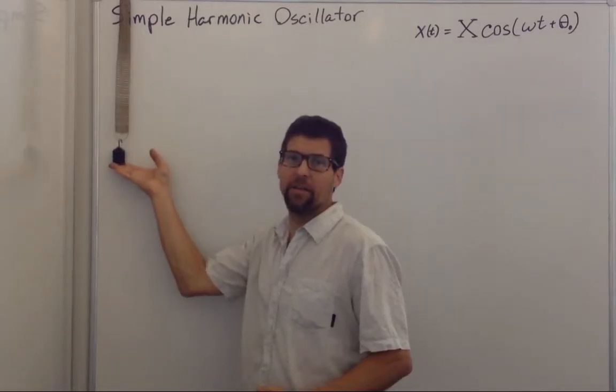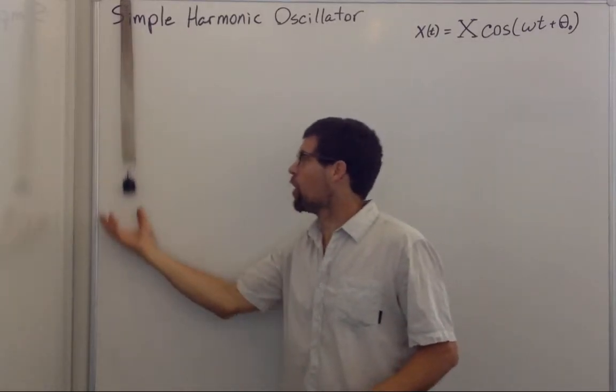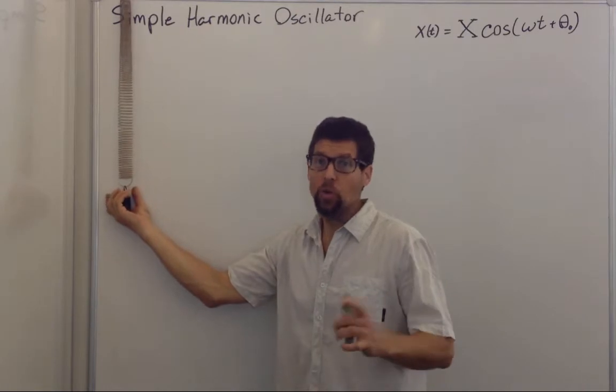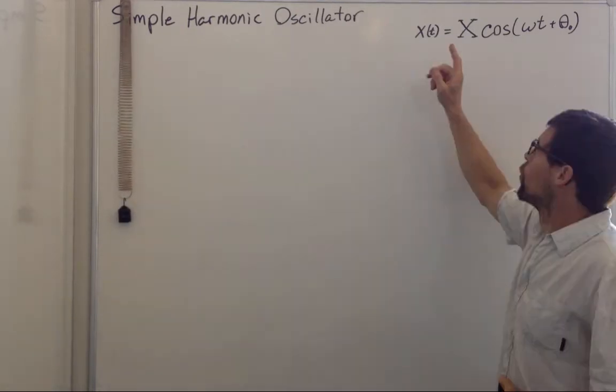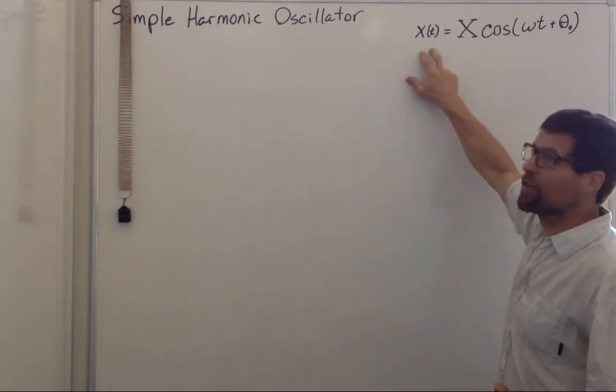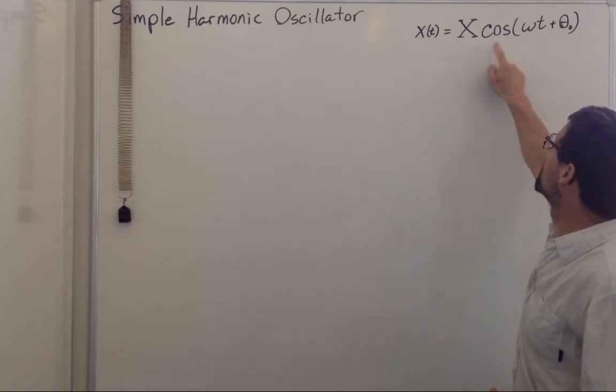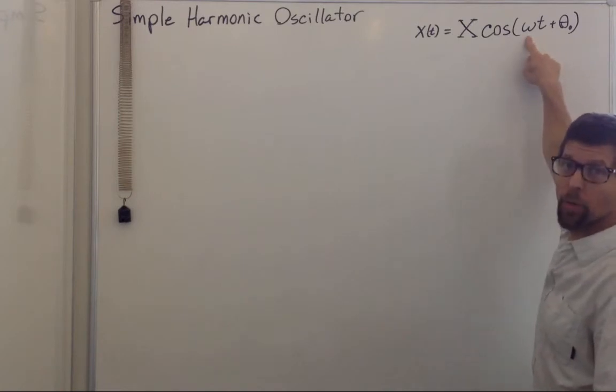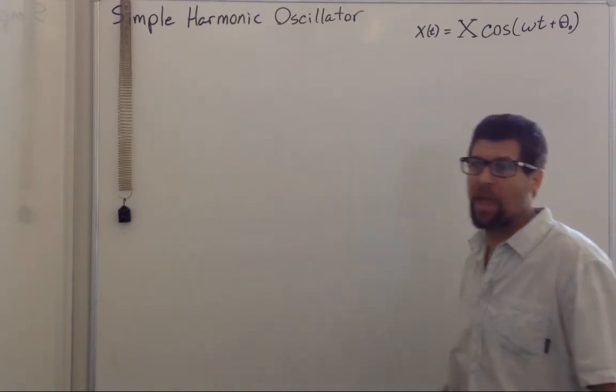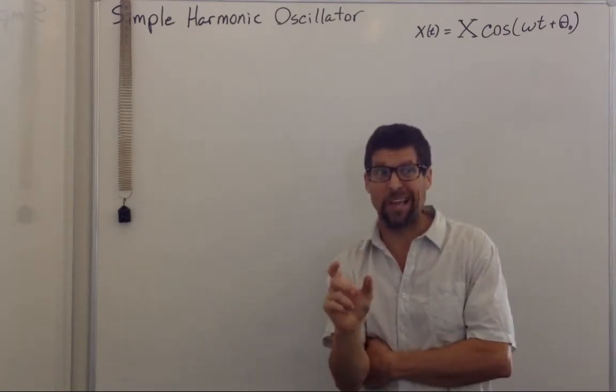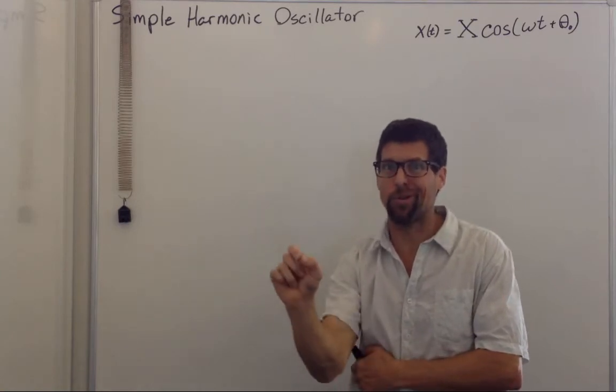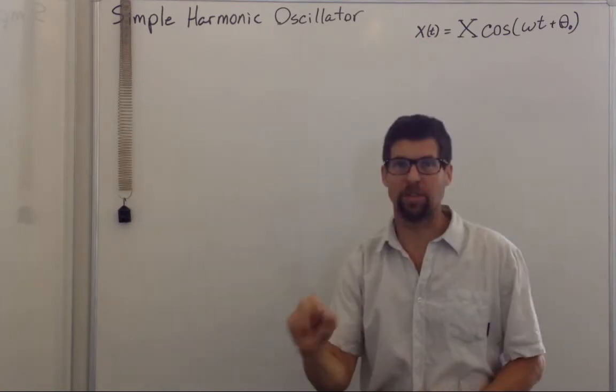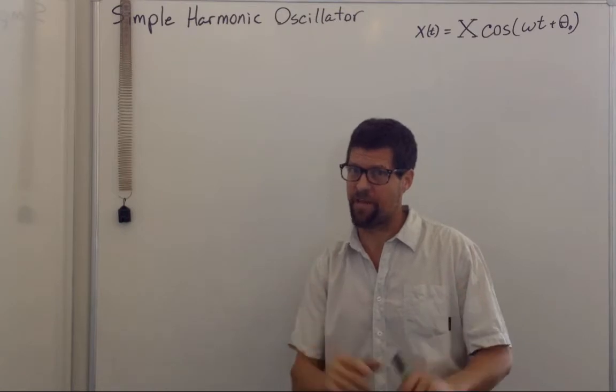For the simple harmonic oscillator, I want to show how using the equations of motion, we derive the time-dependent function of x to be an amplitude times cosine omega t plus phi, and how the solution for omega comes out of this. We do it by what could be called the anal extraction method because you pull the answer out of someone's butt but then verify that it's right.